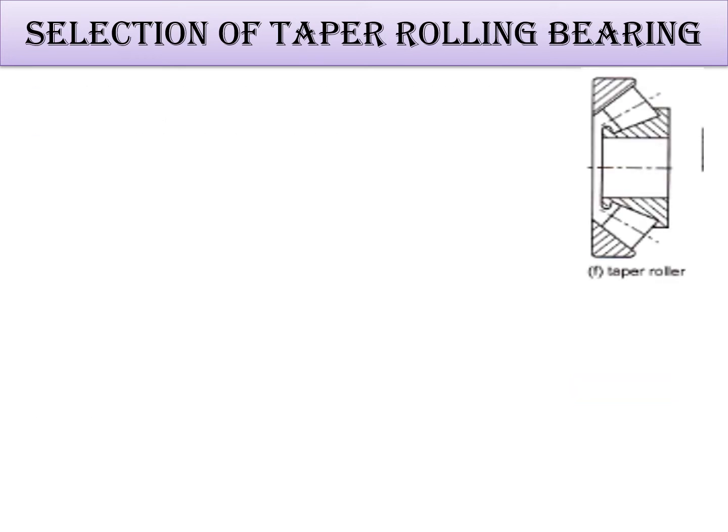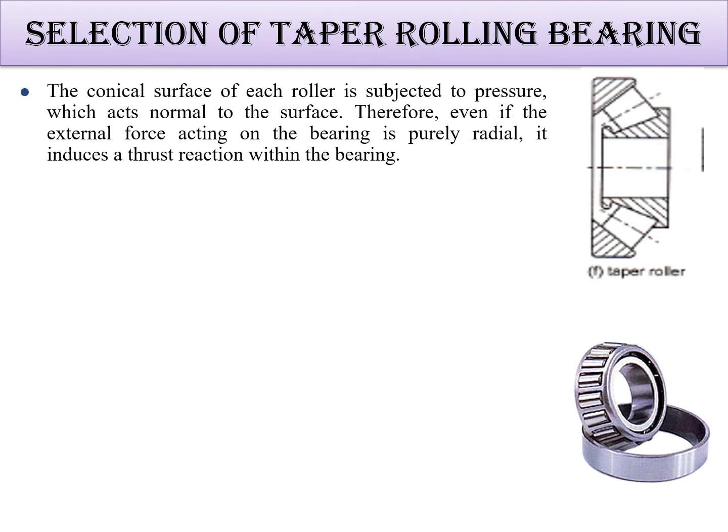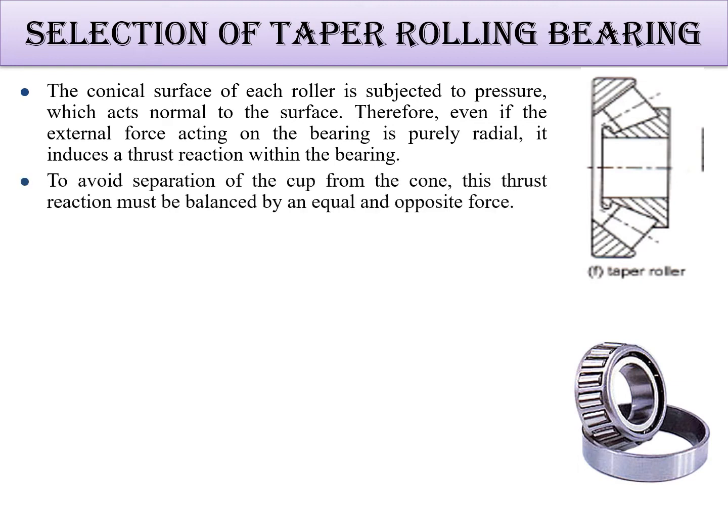It is suitable for both radial and thrust loads. The conical surface of each roller is subjected to pressure normal to the surface. Therefore, if the external force acting on the bearing is purely radial, it induces a thrust reaction within the bearing as well — that's why these bearings are particularly useful.